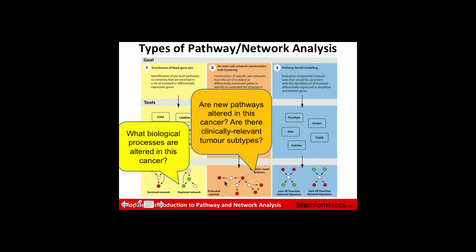The second type is de novo sub-network construction and clustering, which uses a large network — possibly 10,000 to 15,000 genes — onto which you layer your data, such as gene expression, then look for regions of the network that are significantly changing and densely connected. This can identify new pathways or modules you don't know much about yet. The third type is pathway-based modeling, which is more detailed and mechanistic, examining how pathway activities are altered per patient, though these methods are newer and require multiple types of genomics data.